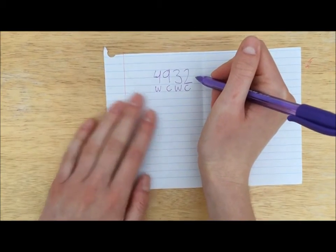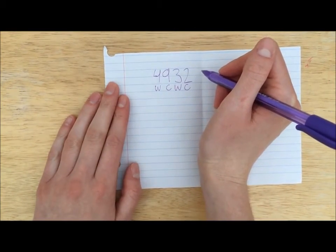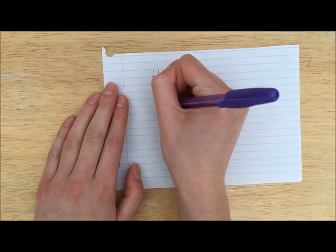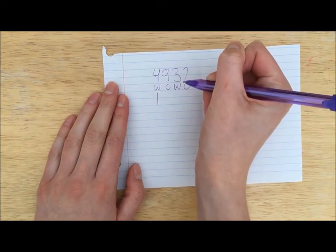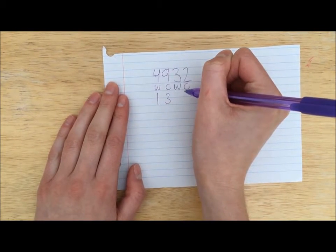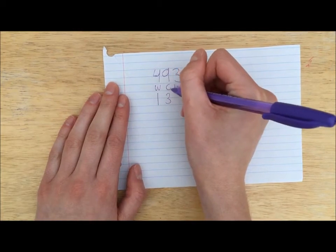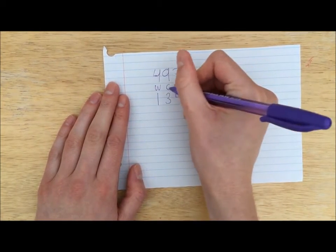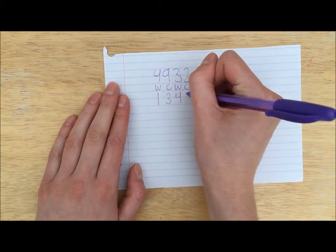The purple player marks each digit with either an H, W, or C to keep track of the clues given. She uses these clues to form her next guess. Since both the 9 and 2 are cold, she knows that they are not in the target number. She decides to try a new digit in the thousands place. She knows that the 3 and 4 are in the wrong places and needs to move them, and she tries another new digit in the ones place.